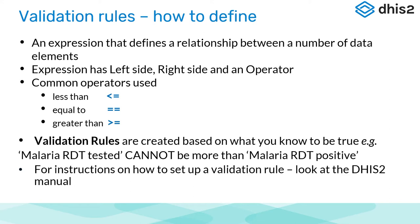Validation rules are created based on what you know is true. Malaria RDT tested cannot be more than malaria RDT positive — because in order to be RDT positive, you had to be tested. Another example: live births weighing less than 2.5 kg cannot be more than live births. For instructions on how to set up a validation rule, read the manual — they are actually very good and we don't read them often enough.